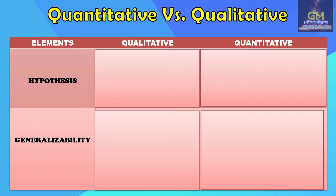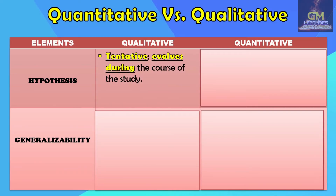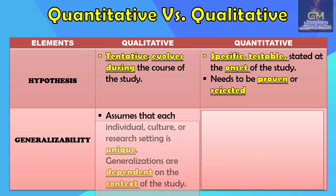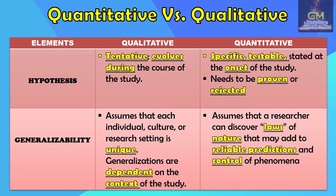In terms of hypothesis formulation, the qualitative research hypothesis is tentative, meaning it evolves during the course of the study. Whereas the quantitative research hypothesis is specific, testable, and stated at the onset of the study, and needs to be proven or rejected. With regard to generalizability, qualitative research assumes that each individual, culture, or research setting is unique, so generalizations are dependent on the context of the study, while quantitative research assumes that a researcher can discover laws of nature that may add to reliable predictions and control of phenomena.